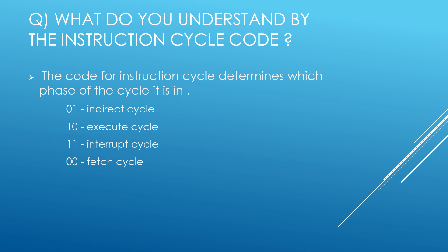What do you understand by the instruction cycle code? The code for the instruction cycle determines which phase of the cycle it is in. If it is 01, it is an indirect cycle. If it is 10, it is an execute cycle. If it is 11, it is an interrupt cycle. And for 00, it is a fetch cycle.